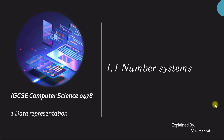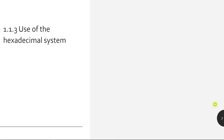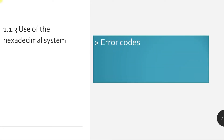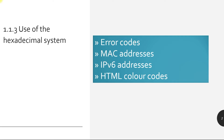Welcome back everyone. This is Computer Science 0478 IGCSE explained by Mr. Ashraf. In this session we're going to talk about number systems, and specifically the use of the hexadecimal system, which is topic 1.1.3. We are going to explain the uses of hexadecimal system, which could be one of these four: error codes, MAC addresses, IPv6 addresses, and HTML color codes.